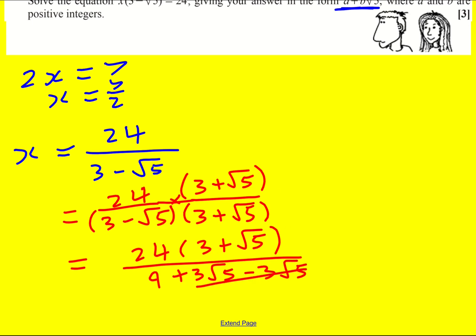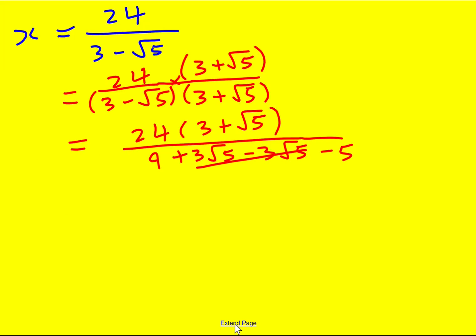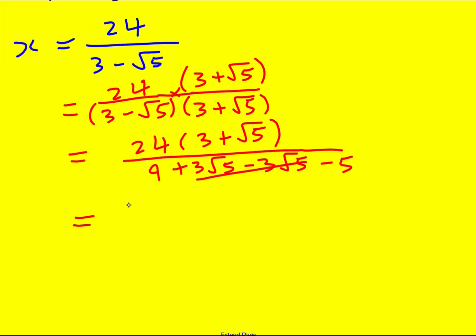That is the entire reason why I multiplied by that. And then root 5 times root 5 is 5, so I get 9 minus 5. This is looking good. So now I've got 24 times 3 plus root 5, all over 4.